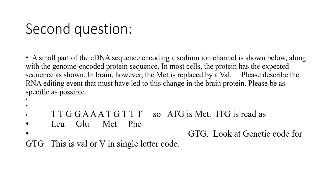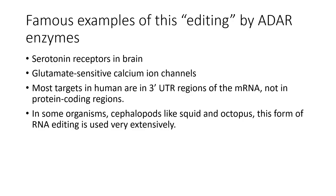Another example: ATG (methionine) with its A edited to inosine becomes ITG, read as GTG — valine. That editing event creates a valine where methionine would have been in the protein. There are many famous examples of ADAR editing, particularly prevalent in the nervous system of Drosophila, where editing changes things like serotonin receptors and glutamate-sensitive calcium ion channels.